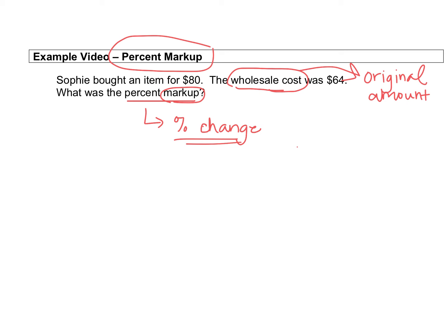So we're going to find the percent markup — same thing as percent change. We subtract our numbers: bigger minus smaller, so 80 minus 64. Then we divide by the starting amount, the original amount, which is the wholesale cost — so we divide by 64. That gives us 16 over 64 in our fraction.